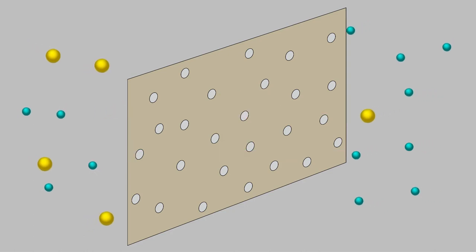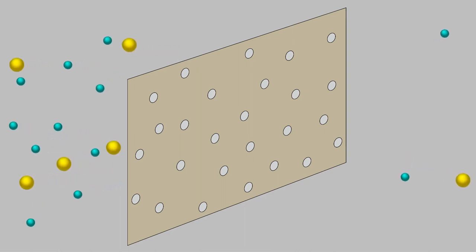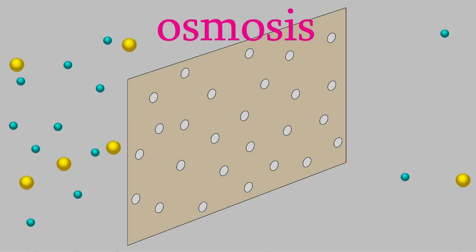That means that in order to get the concentration to be the same on both sides of the membrane, it's the water that will have to move instead of the solute. So the water will move from the right side to the left. That will dilute the solute concentration on the left side and also raise the concentration on the right. Water molecules will keep flowing from the right side to the left until eventually the concentration is the same on both sides of the membrane. This process is called osmosis. Osmosis is the movement of water, but not solute, across the semipermeable membrane in order to equalize the concentration on both sides.